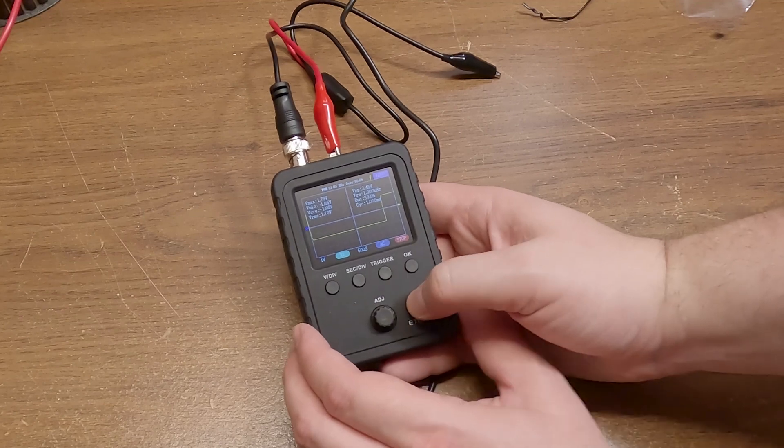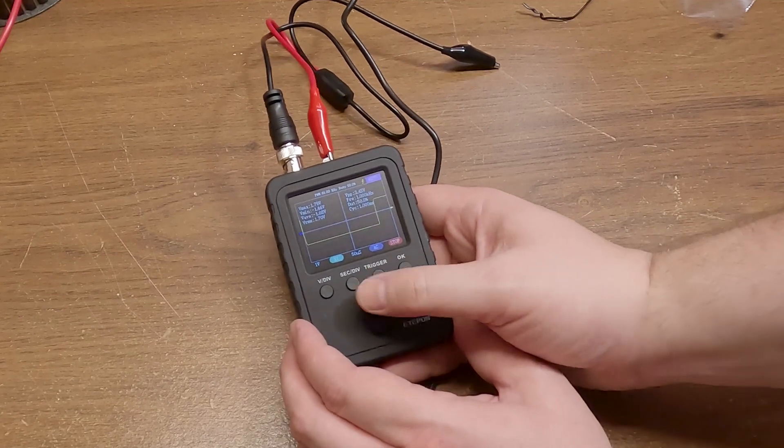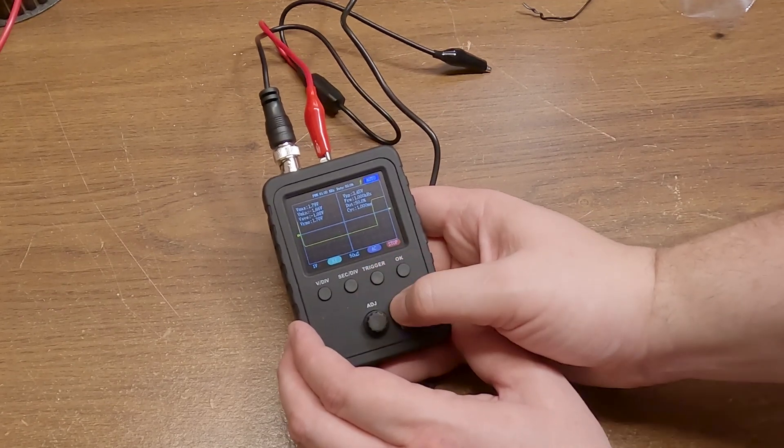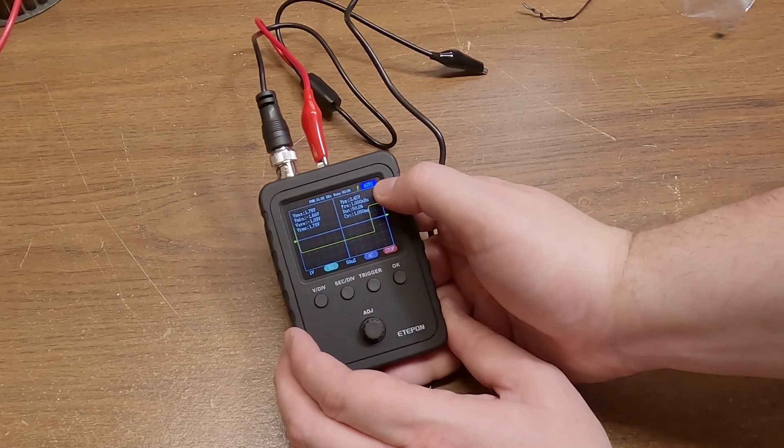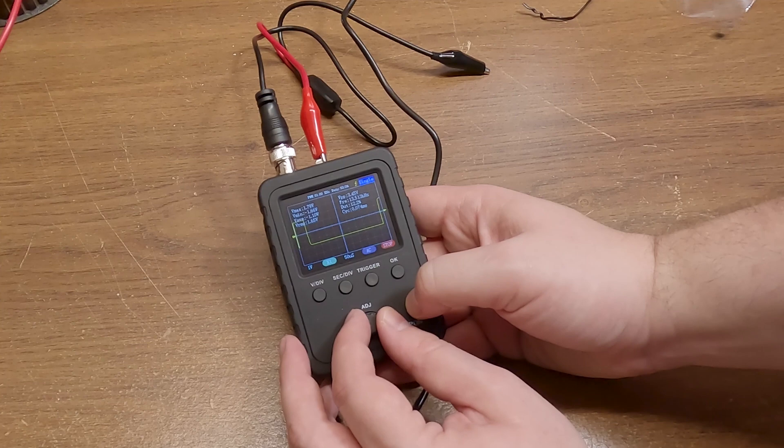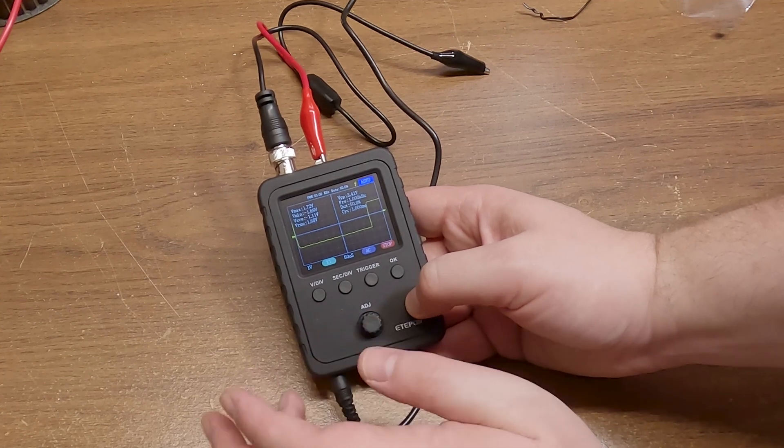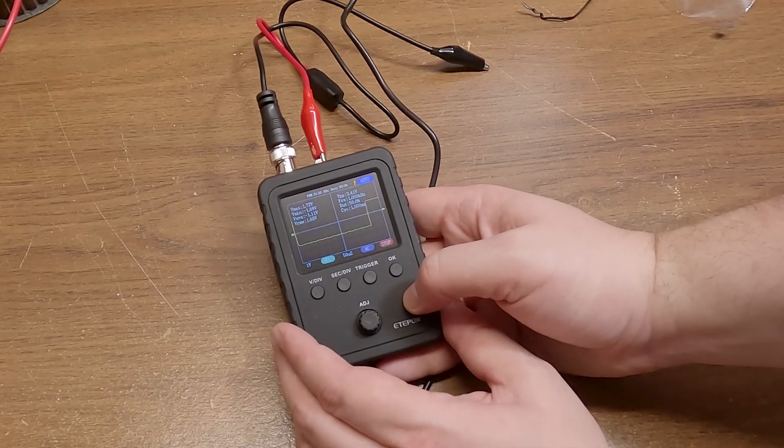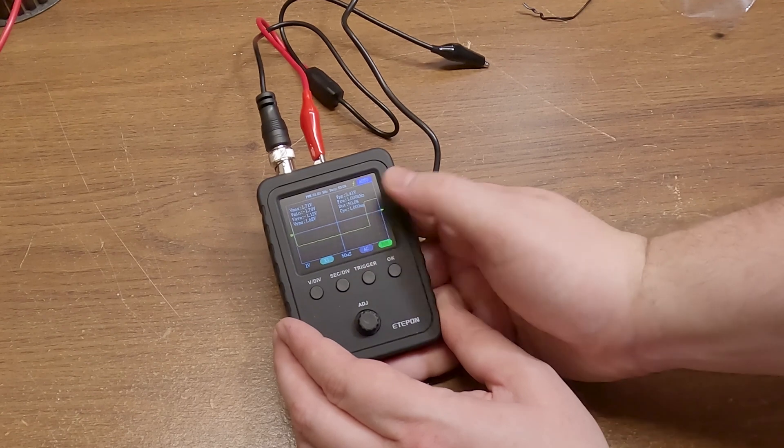When you press one of these buttons, you can then adjust with the little dial wheel what it's doing. If we hit the trigger button, you see it up here just selected auto and we can switch to normal or single, but it's probably better just to always leave it on auto. You hit the OK button and it goes back to running.